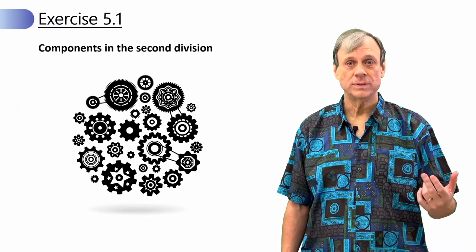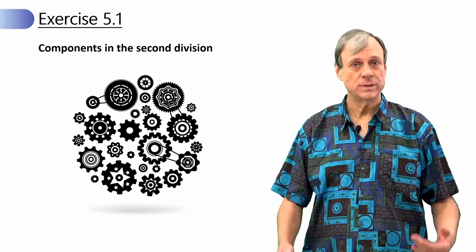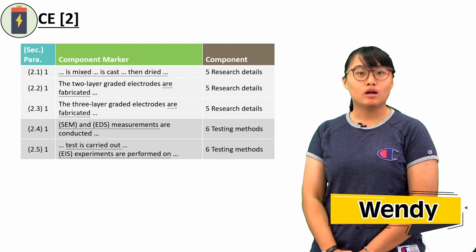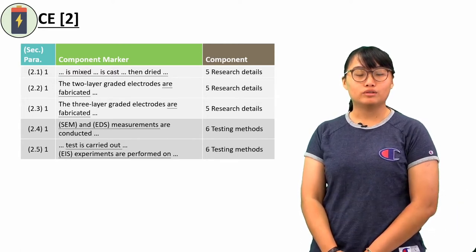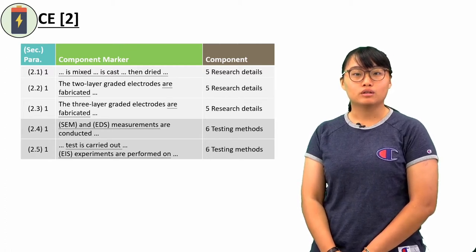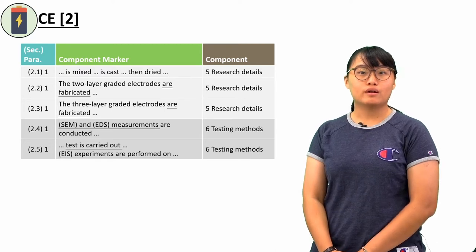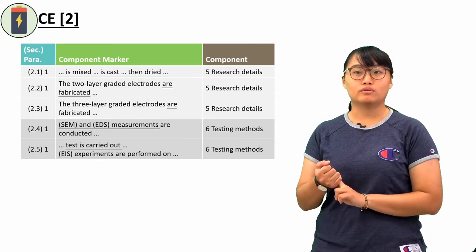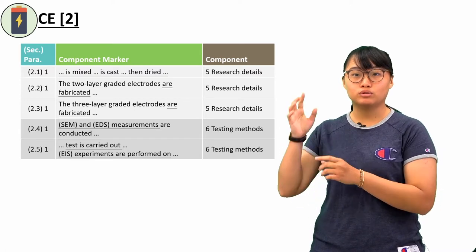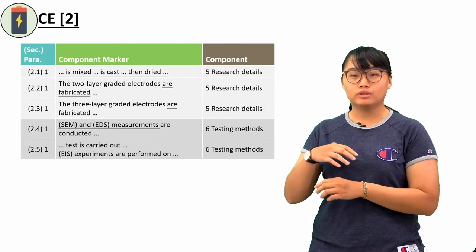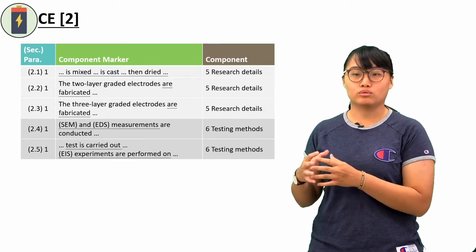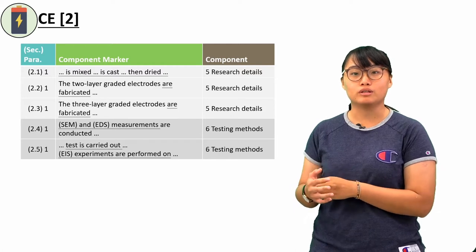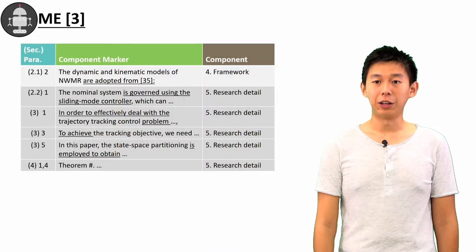Now we'll show how to make the tables found in exercise 5.1, showing the components in the second division. For the chemical engineering example: the method division has five sections — three sections for research details and two sections for testing methods. Each section uses only one paragraph to express the content, so there's not too much to mention inside the method division. The detailed meanings of testing methods will be explained in the next lessons.